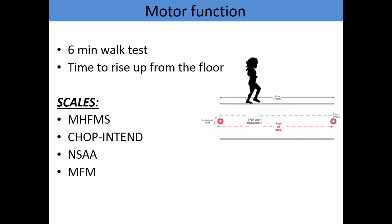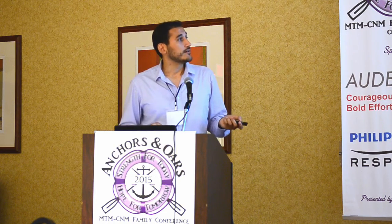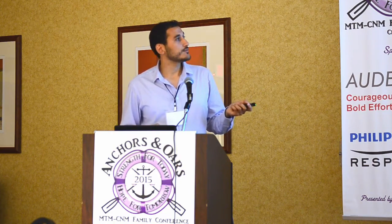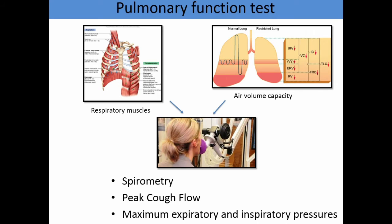For ambulant patients, we will also assess motor function using the six-minute walk test, time to rise from the floor, and other scales. Pulmonary function testing is also really important. We need to evaluate respiratory muscles and volume capacity — the team from Florida will tell you more about this — but we will measure these using spirometry, peak cough flow, and maximum inspiratory and expiratory pressures.